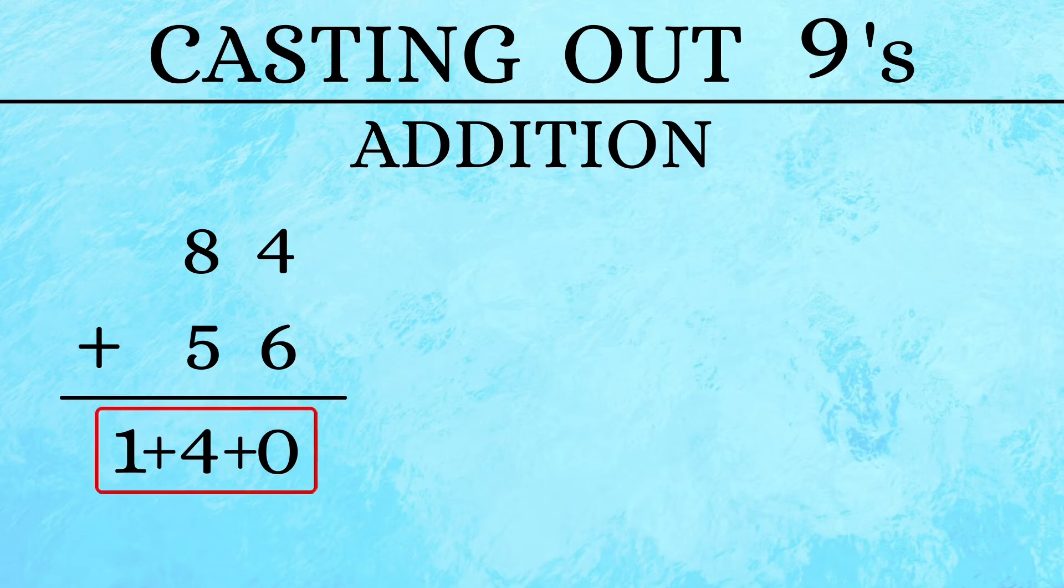As our first step, we add up the digits of our answer number 140. 1 plus 4 plus 0 gives us a 5. Next we move on to the numbers in our question.